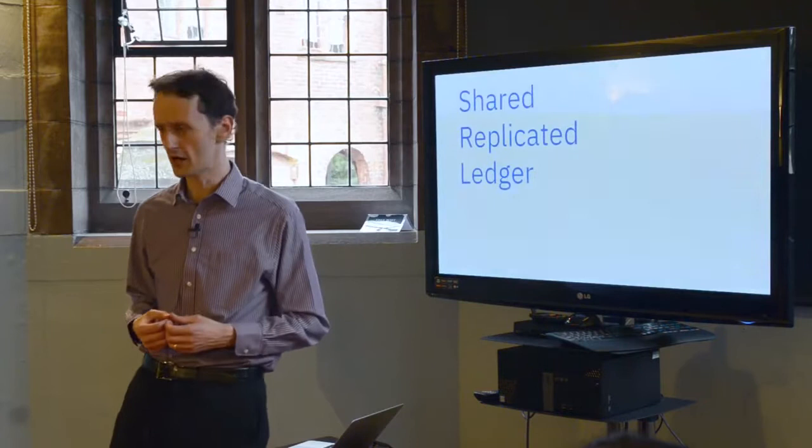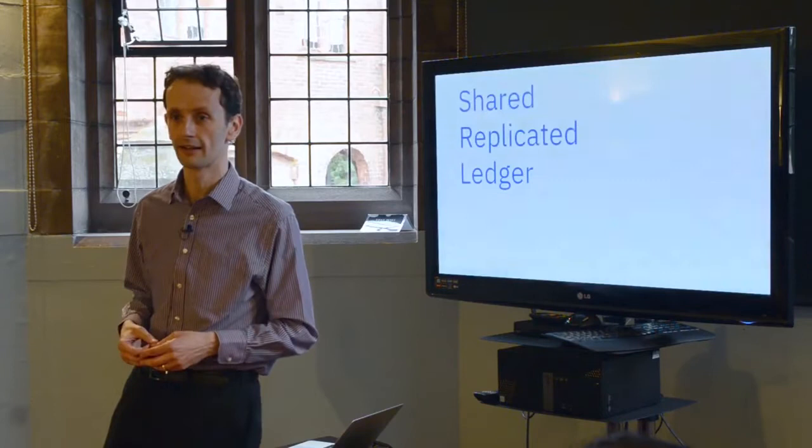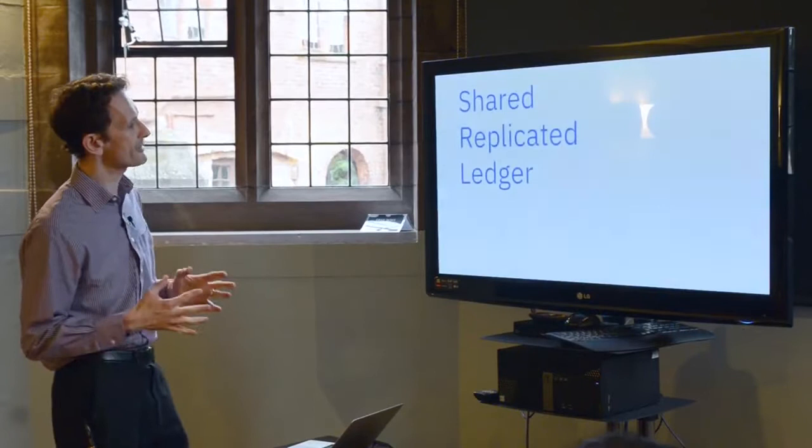And for those private networks, I would put the word permissioned in there as well. Because you need to know who you're dealing with. Every single business, certainly with whom IBM works, is regulated in some way. And the regulations include things like anti-money laundering. KYC. Know your customer. Combating the financing of terrorism. These are all things that require businesses to know exactly who they are dealing with.